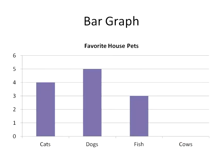First off, a bar graph. This is the most basic type of graph where you usually have along the bottom certain categories — like in this case we're talking about favorite house pets, which I just made up. And then a number along the left side. Bar graphs can be turned on their side; it's not always going to be on the left and on the bottom, but this is the most basic type.